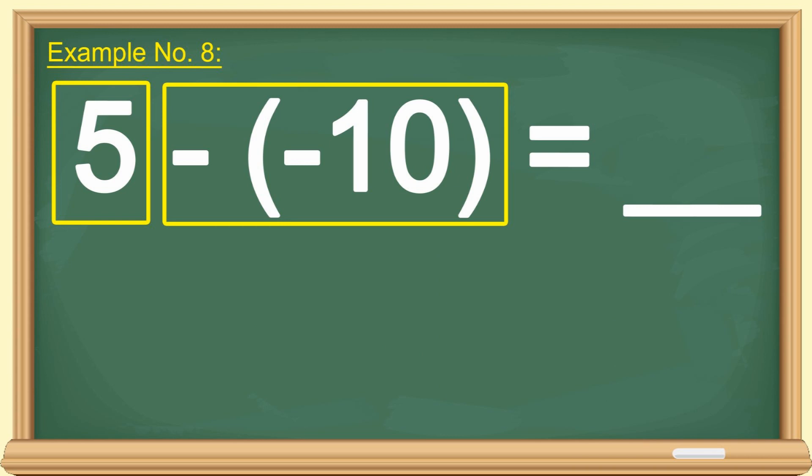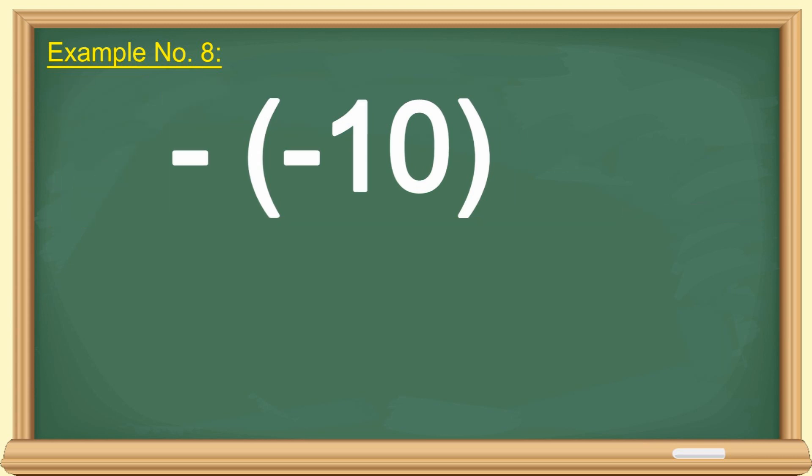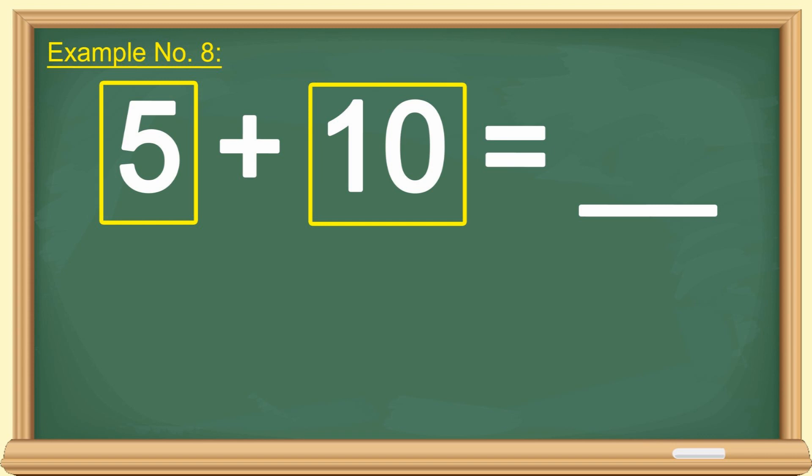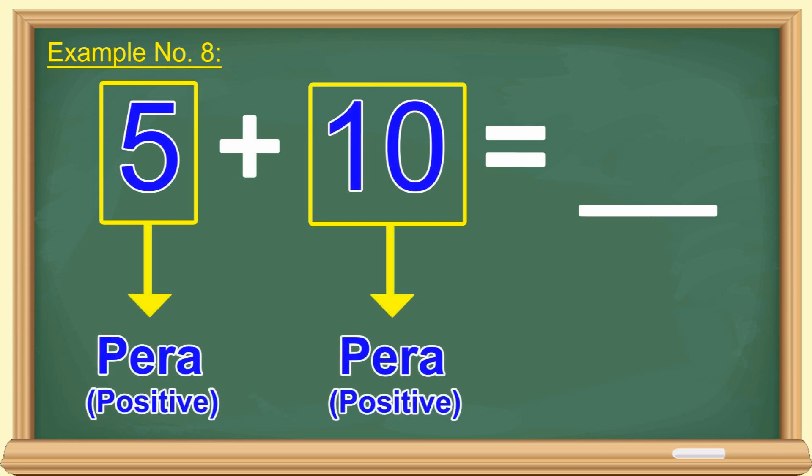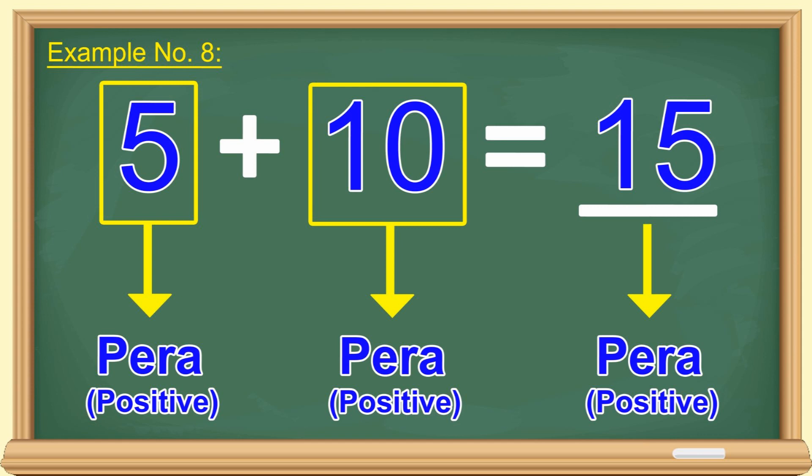Balik na tayo ngayon sa given natin. 5 at minus negative 10. Double negative yung minus negative 10. Ibig sabihin, positive 10 siya. So, meron na tayong 5 at 10. Ang tanong, parehong utang o parehong pera? Parehong pera. At magkano ng pera mo? 15 pesos. At dahil pera, positive 15 yun. Gets?